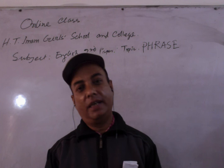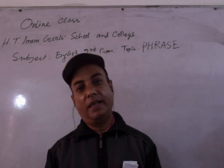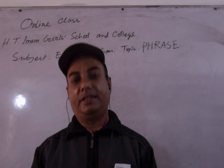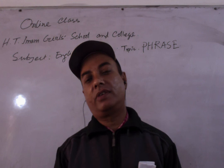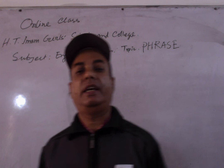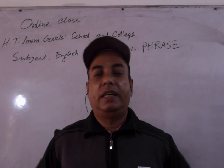There is another kind of phrase: verbal phrase, or verb phrase. The structure is: auxiliary verb plus main verb equals verbal phrase. For example, 'Boys are playing in the field.' Here, 'are playing' is a verb phrase, where 'are' is the auxiliary verb and 'playing' is the main verb.